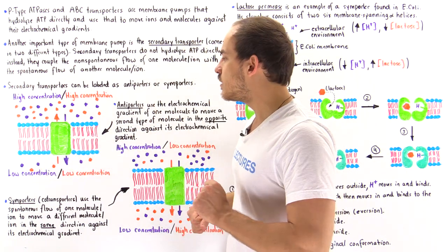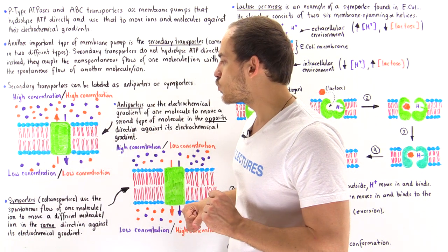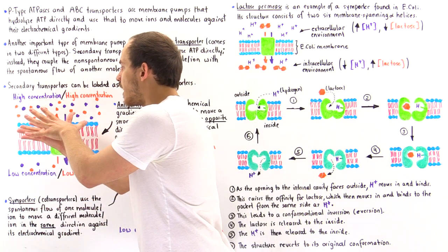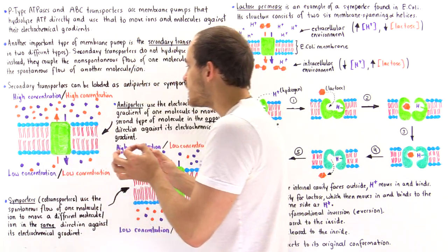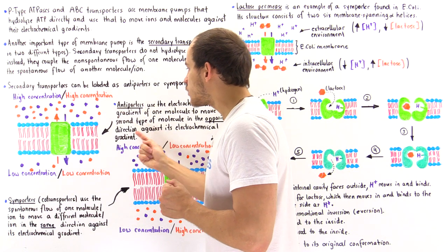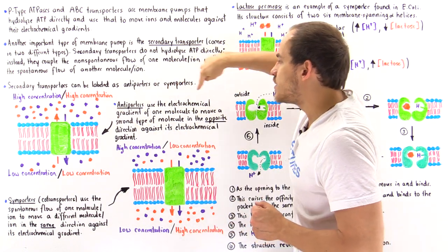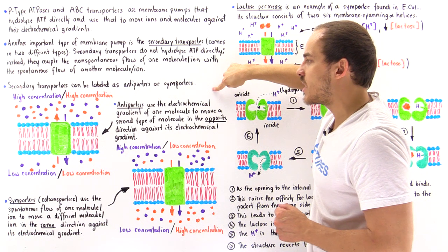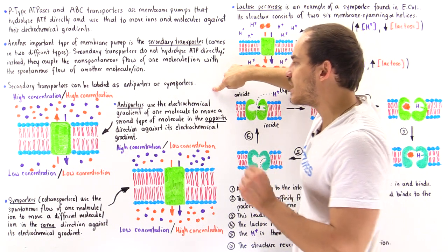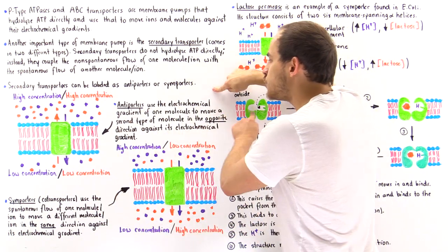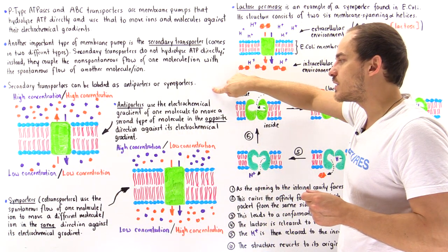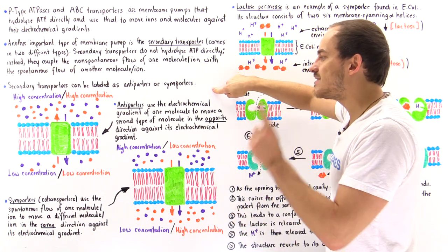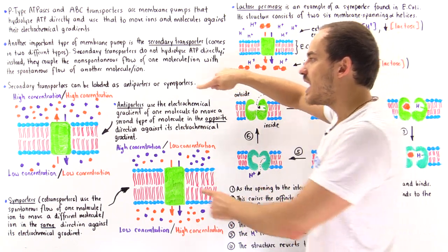We move the orange molecules against their electrochemical gradient, from the inside to the outside. So antiporters use the electrochemical gradient of one molecule to move a second type of molecule in the opposite direction against its electrochemical gradient.